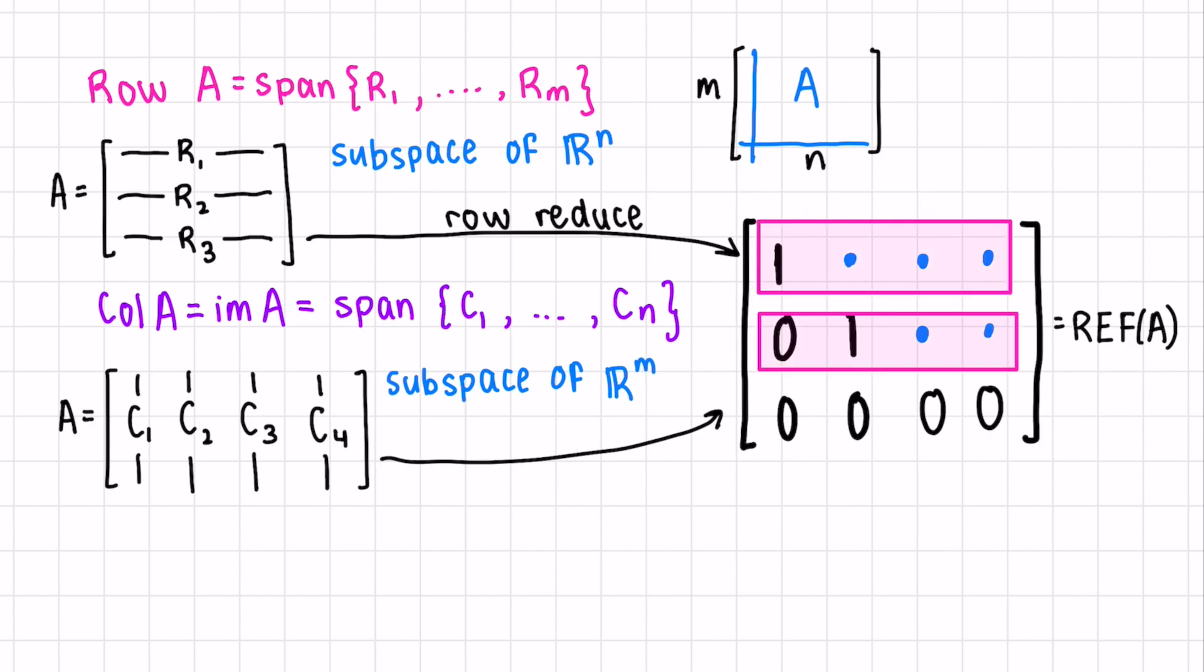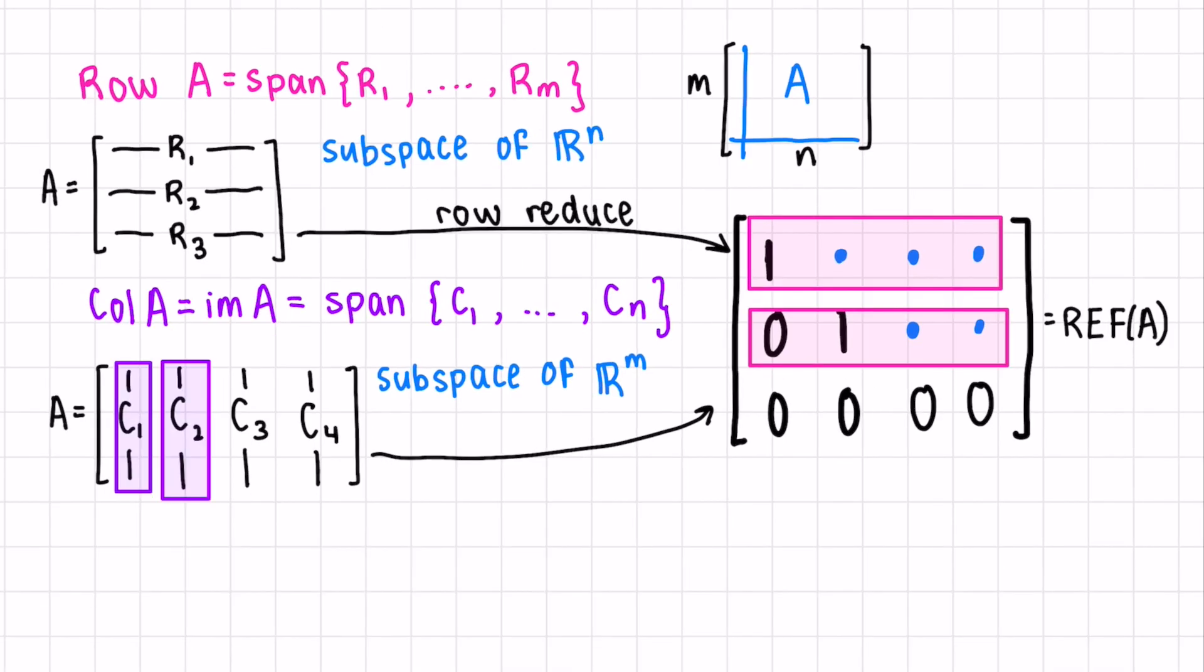The basis of our column space, on the other hand, would be the columns with the leading ones. But not the columns of our row reduced matrix, the columns with the leading ones, so column 1 and column 2, of our original matrix. Since column 3 and 4 don't have leading ones, they aren't needed in the basis of the column space.